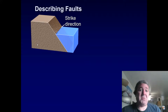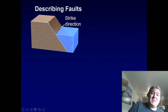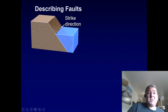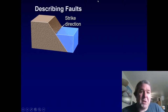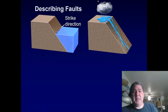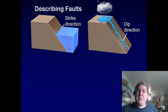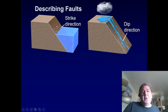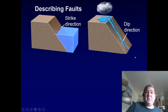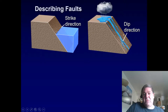Describing faults: strike direction is the planar expression of the fault on the surface — what compass direction is it running? Dip direction is always perpendicular to strike and runs straight down the slope of the fault. Together, strike and dip define the fault plane.